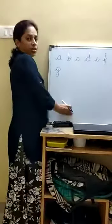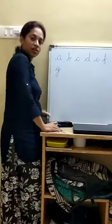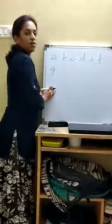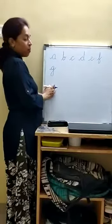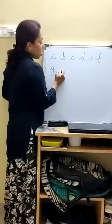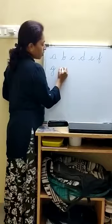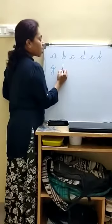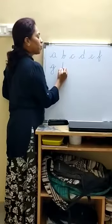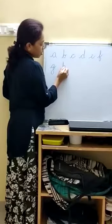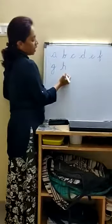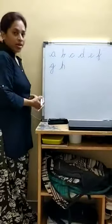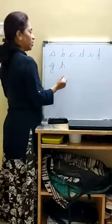Next letter is H. Name of the letter is H. Sound of the letter is H. How to write? Starting from the third line, go to the first line, come back, and curve from the second line. H. Hen. H. Hat.